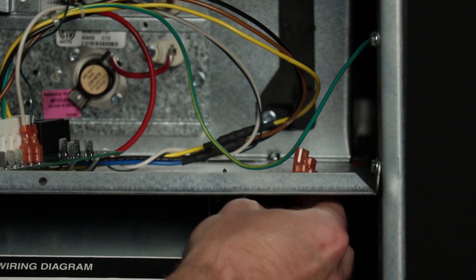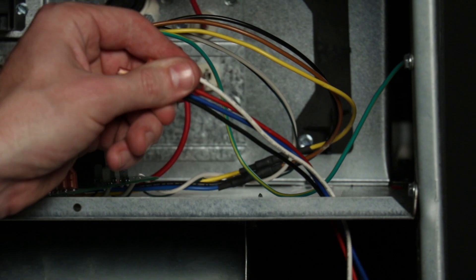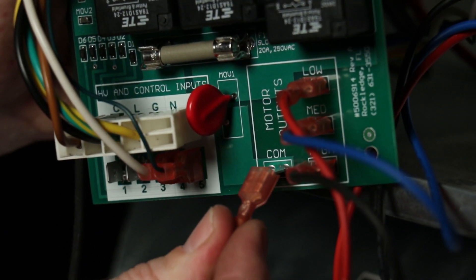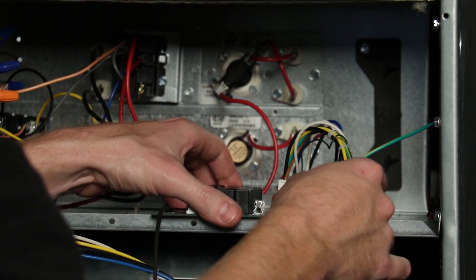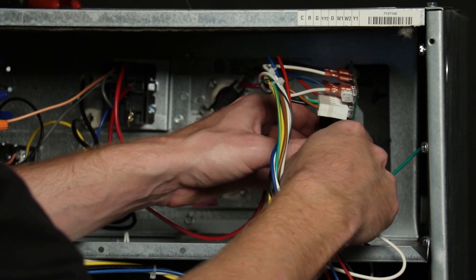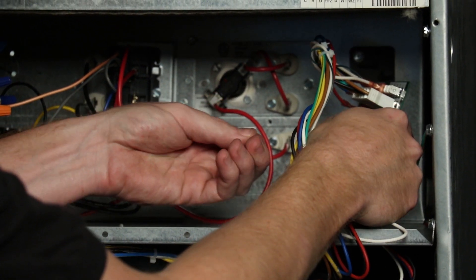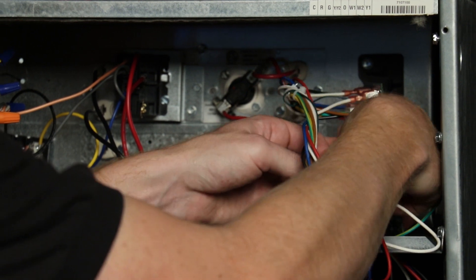Step eight is to route the wires from the new PSC blower motor up into the electrical box and connect them to the quick swap board. Step nine is to attach the quick swap board to its mounting bracket. Line up the holes and snap in the clips.